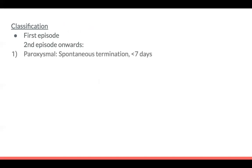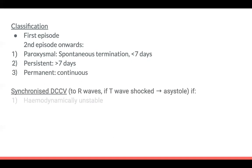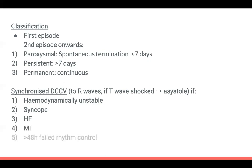Briefly on AF classification and when to treat: if it's a first episode, work out whether rhythm control is needed or just treat the underlying cause. From a second episode onwards, classify as paroxysmal (spontaneously terminates, less than seven days), persistent (more than seven days), or permanent (continuous). Indications for DC cardioversion: haemodynamic instability, syncope, heart failure with AF, MI causing resultant AF, or failed rhythm control with drugs. When performing synchronised DC cardioversion, sync to the R wave — not the T wave — otherwise you'll cause asystole.